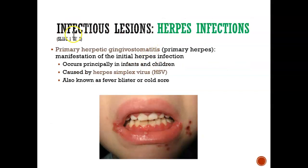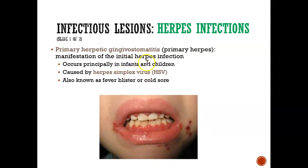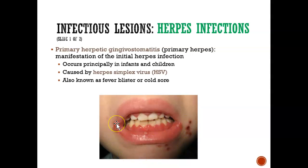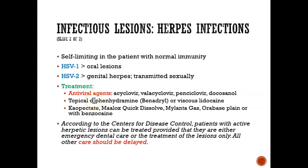The second infectious condition we're going to look at is herpes infection — cold sores where you have them all over your mouth. This usually happens to young kids, infants and children. It's known as primary herpetic gingivostomatitis, or primary herpes, and presents as fever blisters or cold sores. It's very, very painful.